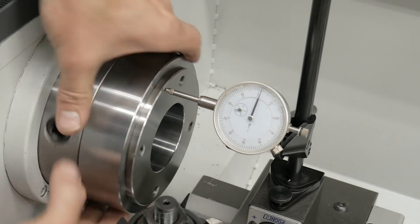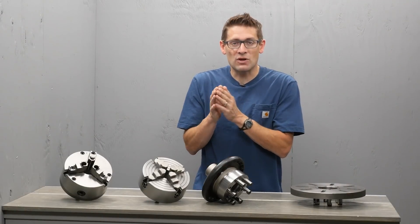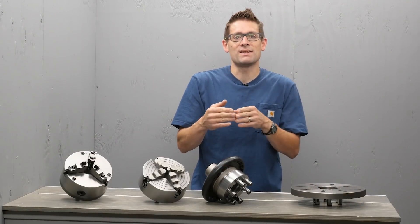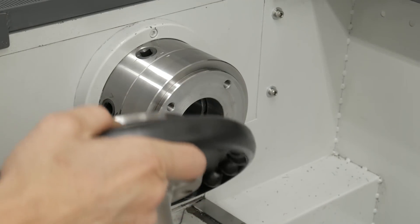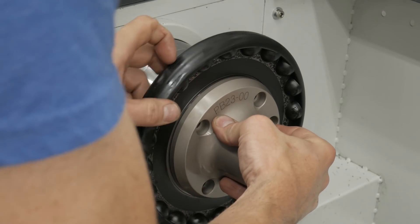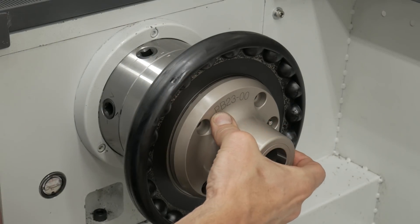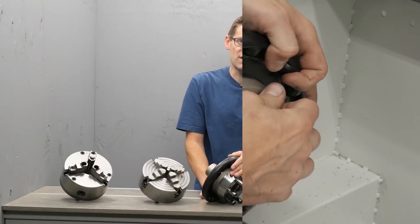I then checked the run out on the backing plate face and just like the instructions indicate, I took a light facing cut to get this perfectly flat and true the way that I have it mounted on the lathe and the way that I have things torqued down. That got things absolutely running dead straight. I then mounted the chuck to the backing plate and dialed in the concentricity.